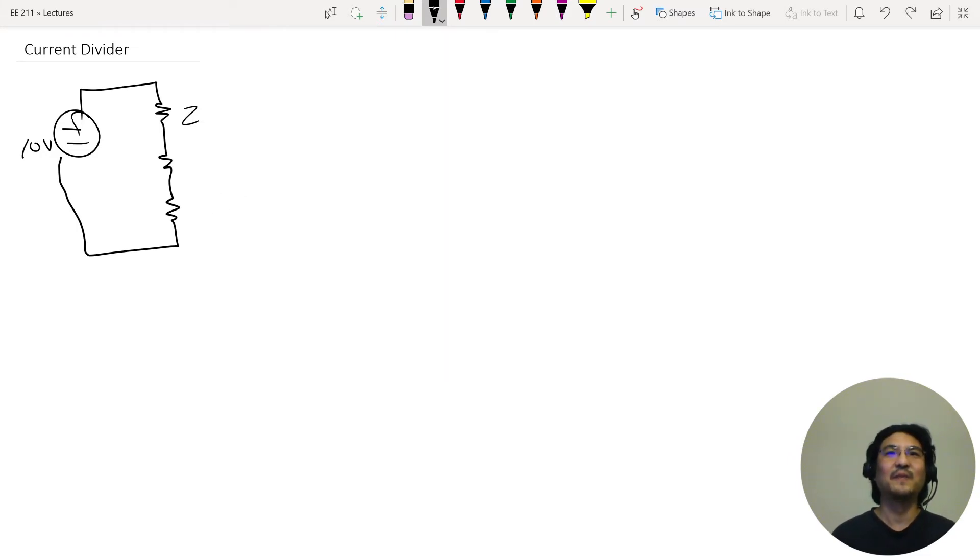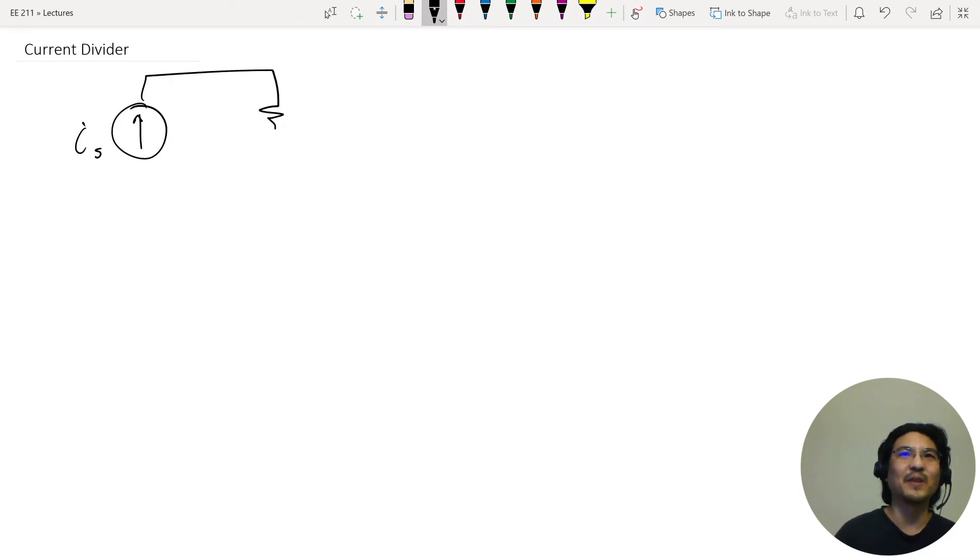A current divider is, you have a current source, and then now we want to split it into different smaller currents. And so that happens in parallel, like this. And then each of these will have a different current here.